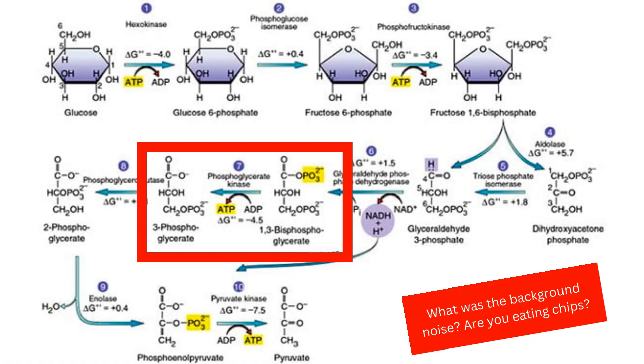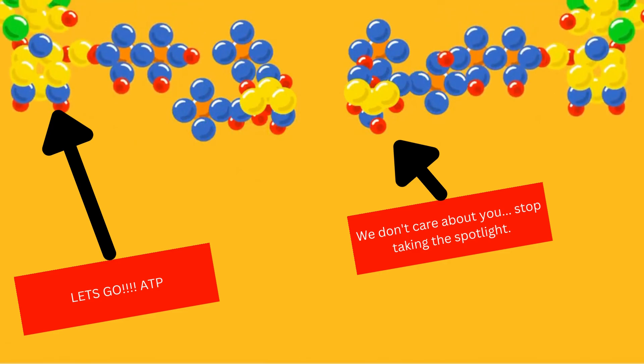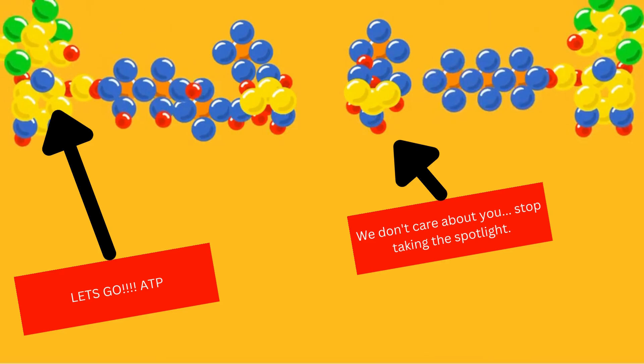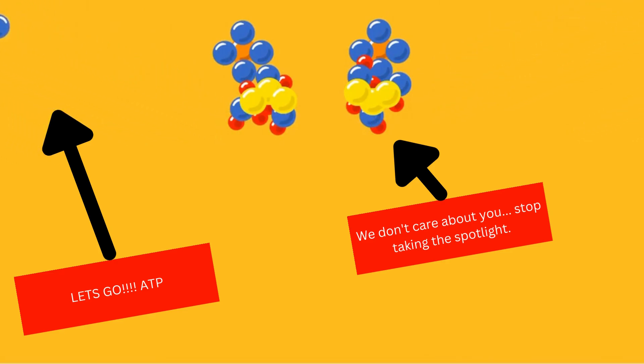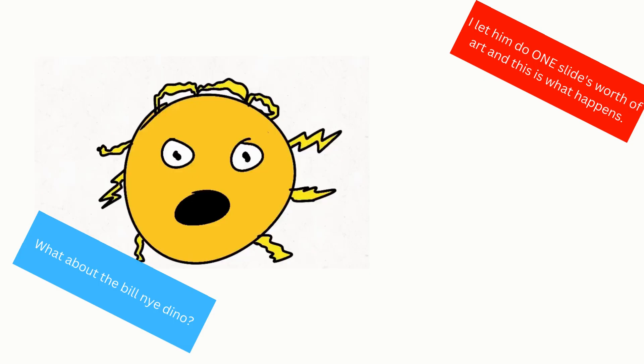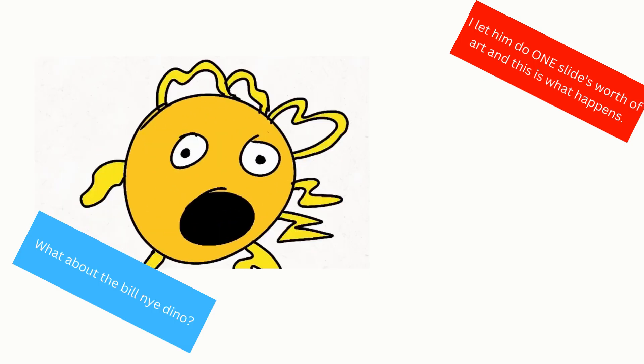What then happens is an ADP steals a phosphate group from our 1,3-biphosphoglycerate to form 3-phosphoglycerate and an ATP. This is our first ATP produced, but so far we have used two ATPs, so let's hope we get more.